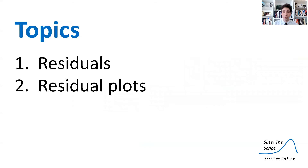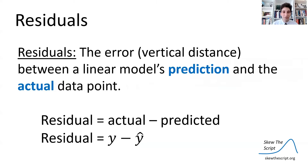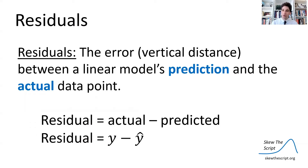In order to learn about this question we first need to develop our skills in residuals and residual plots. Residuals are the error — the vertical distance between a linear model's prediction and the actual data point. Here's the formula for the residual. Let's look at an example.